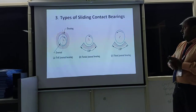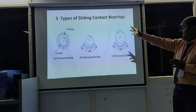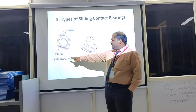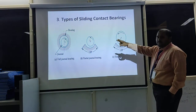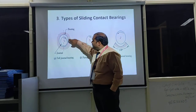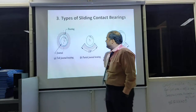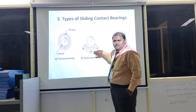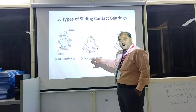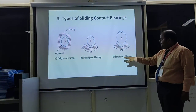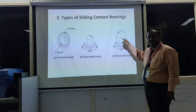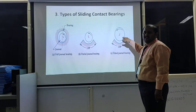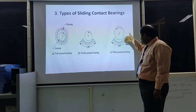Coming to the third criteria — types of sliding contact bearings. There are three types: full journal bearing, partial journal bearing, and fitted journal bearing. In full journal bearing, the journal rotates 360 degrees inside the bearing. In partial journal bearing, it rotates only 120 degrees. In fitted journal bearing, the journal also rotates 120 degrees, but here the size is fitted — the parts are fitted together.